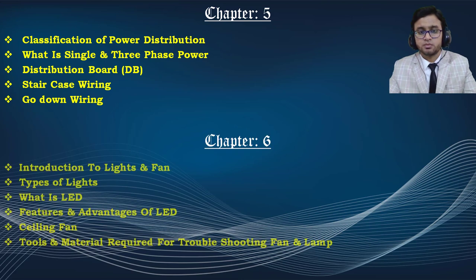In chapter 6, we are going to discuss lights and fans — the different types of lights, what to use for interior versus exterior applications. We will focus on LEDs, as LED is in high demand in the market and has many advantages and features. We also cover ceiling fans and the tools and materials required on site when installing or maintaining lights and fans.